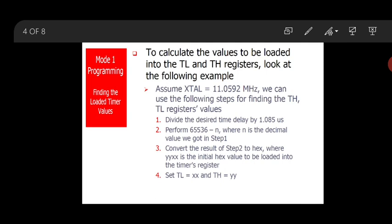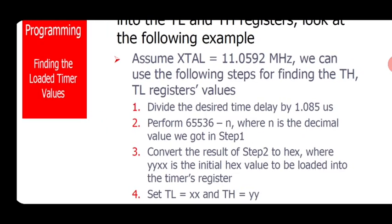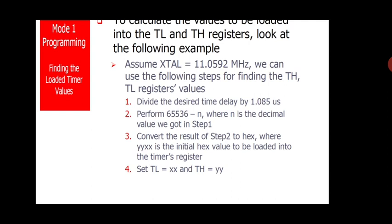Step 2: Perform 65536 minus N, where N is the decimal value obtained in Step 1. We subtract from 65536 because that is the maximum 16-bit value — FFFFH in hex equals 65535 decimal, so the rollover count is 65536. After subtraction you will get a number in decimal format.